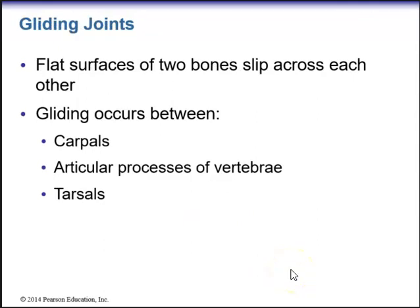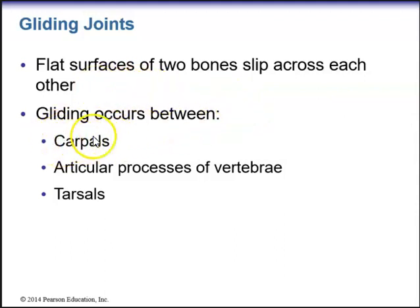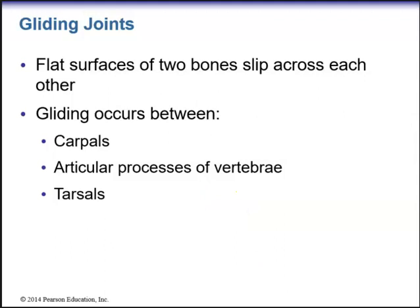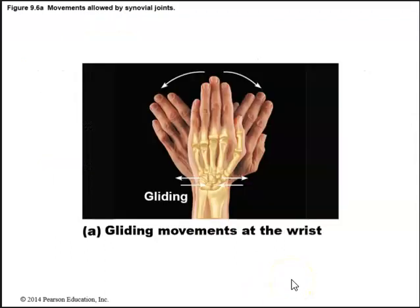Gliding joints have flat surfaces of two bones that slip across each other. Gliding occurs between the carpal bones of the wrist, between the articular processes of vertebrae, and between the tarsals — the ankle bones of the foot. The gliding movement of the carpal bones allows the hand to move medially and laterally.